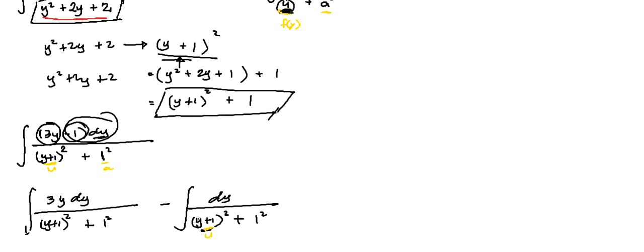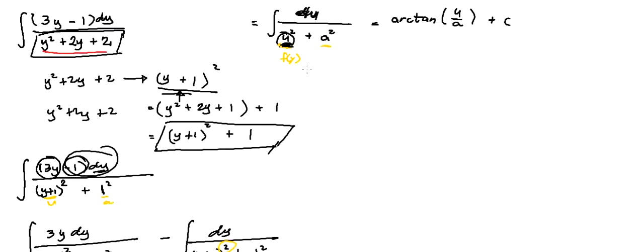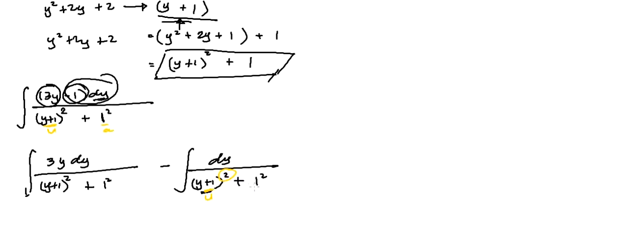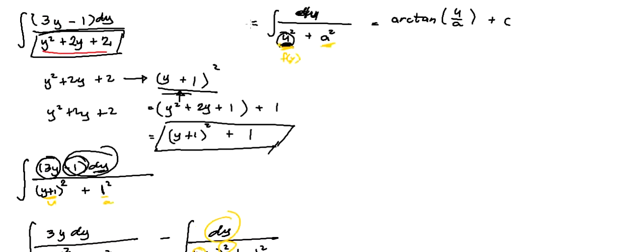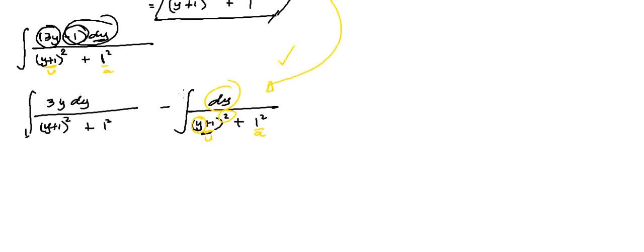Our u, which is the function of y, is equal to y plus 1; that is being squared and equals 1. Our constant a, also being squared, is 1. The derivative of y is just dy. So we are already in this standard form, and we can apply the arctangent formula to solve the second part.